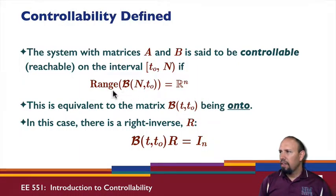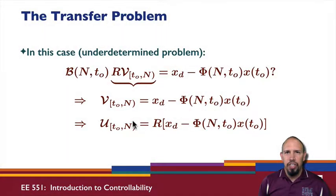So, notice that this is equivalent to this matrix for some t being onto. That is, if I have range being all of R^n, this matrix is onto. Whenever you have a matrix that is onto, there always exists a right inverse. That is, if I multiply this matrix times the right inverse, I get an identity matrix. So, we have that situation. I'm going to use this right inverse here in just a second.